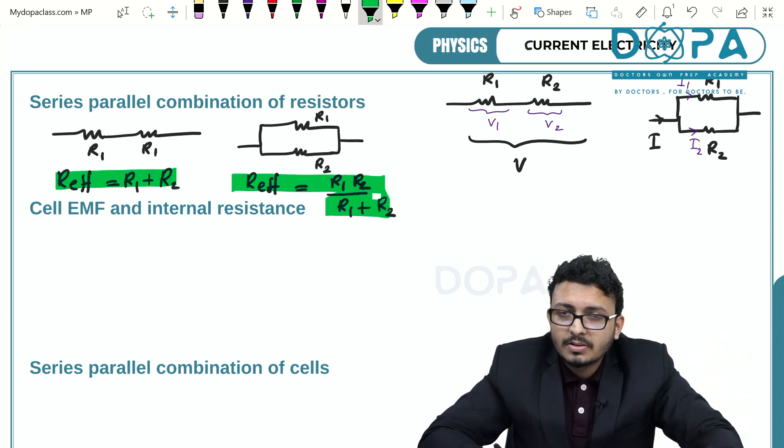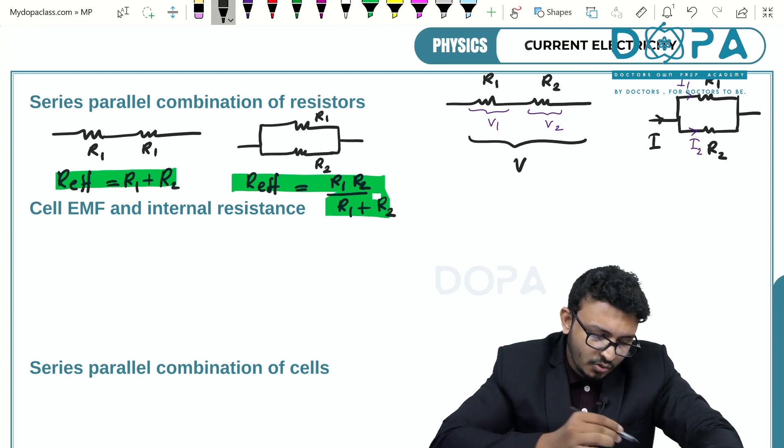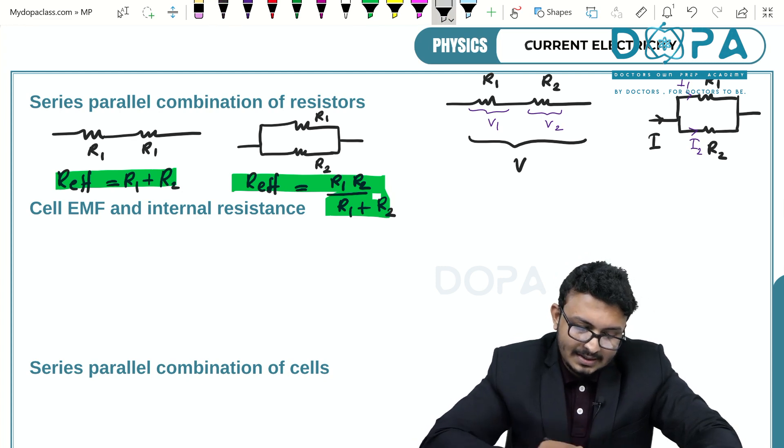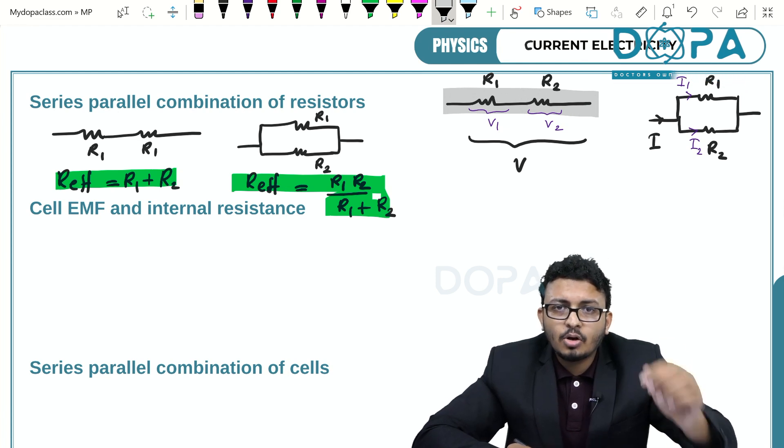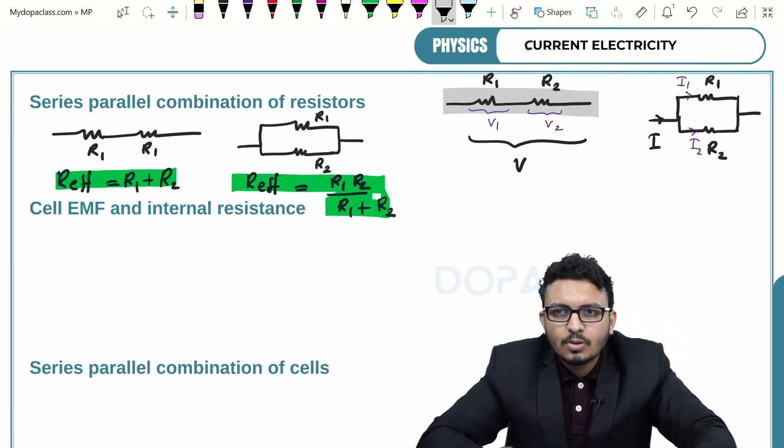Now I'm going to ask you a different question. We have two resistors in series, R1 and R2. They are in series. The total potential difference across them is equal to V.